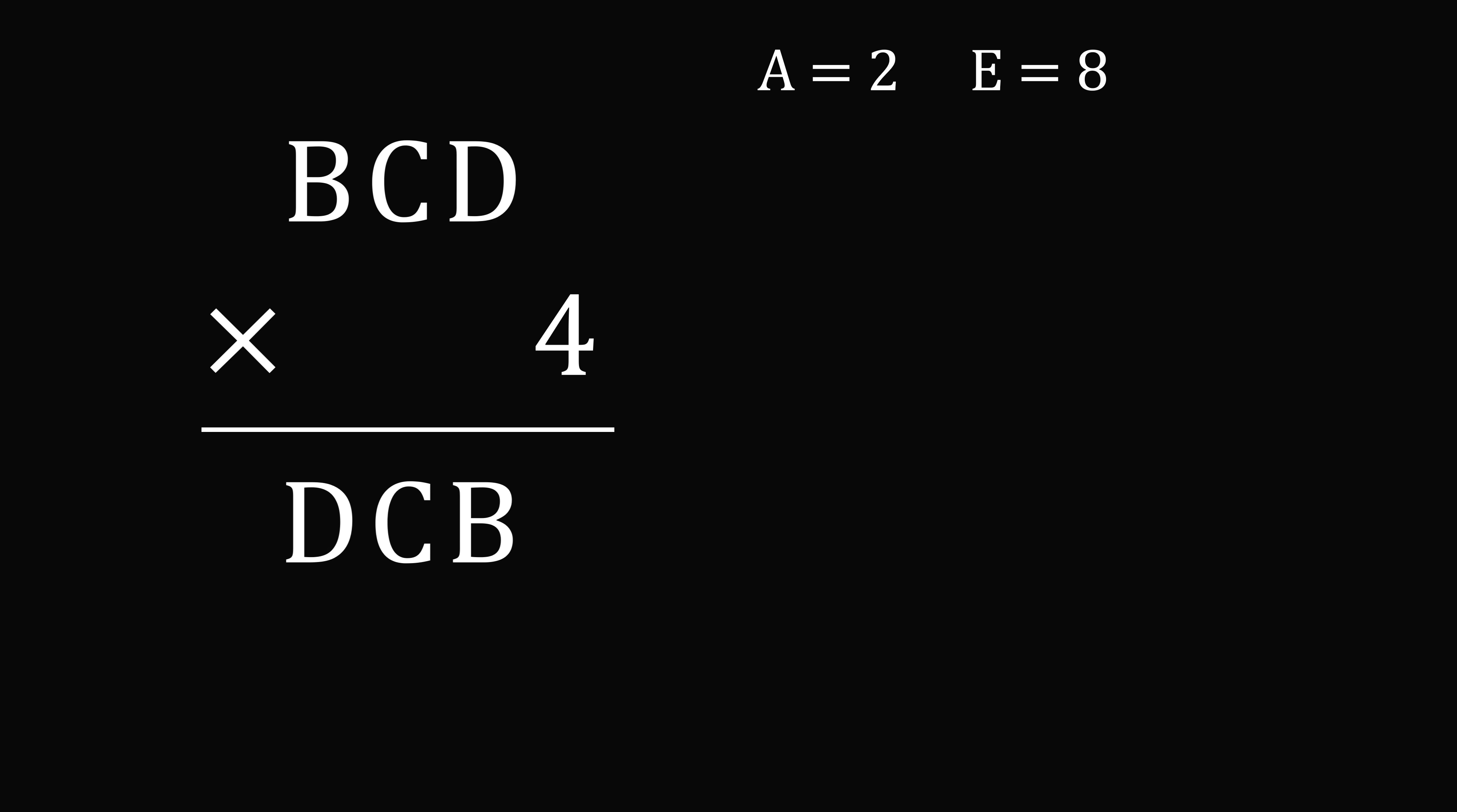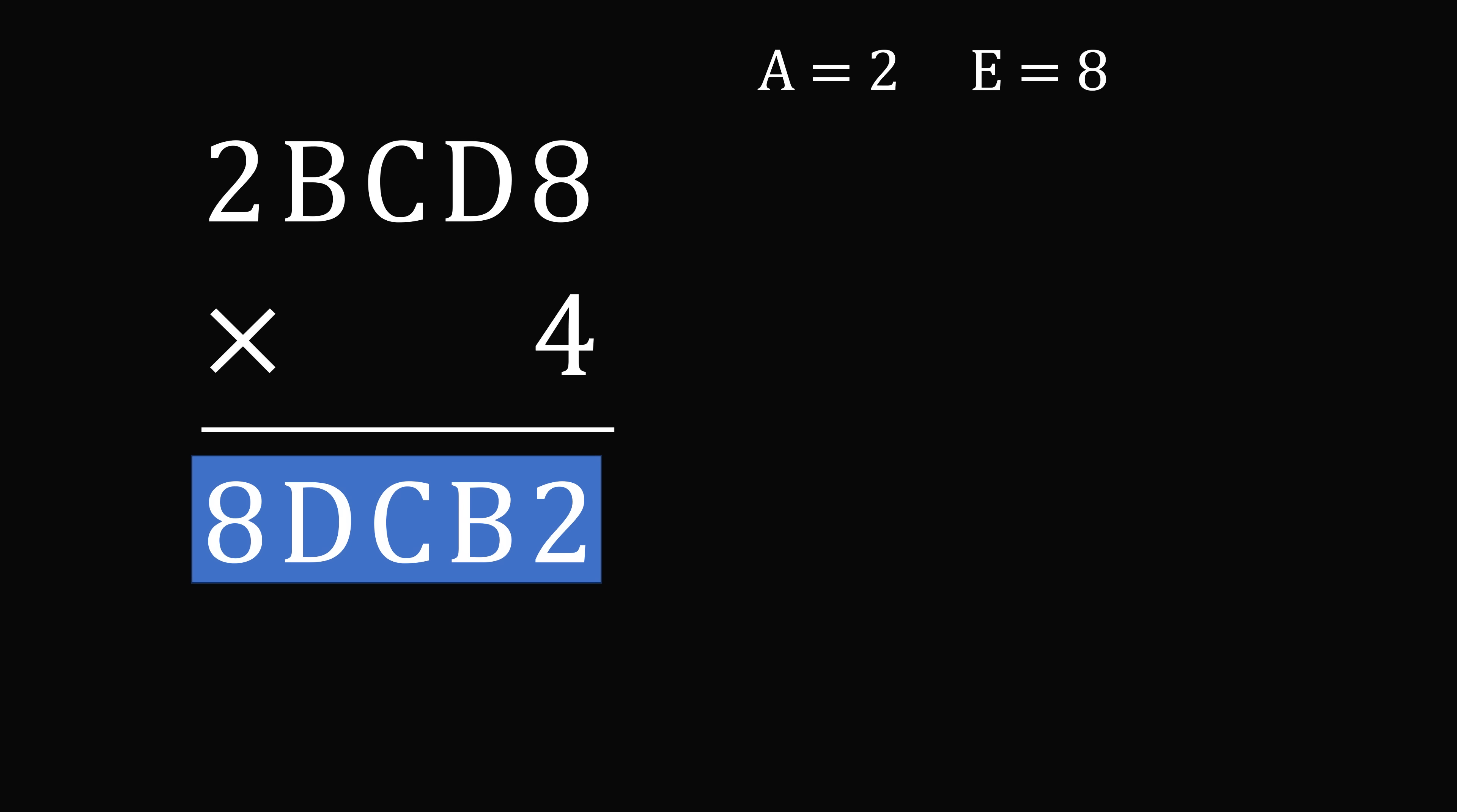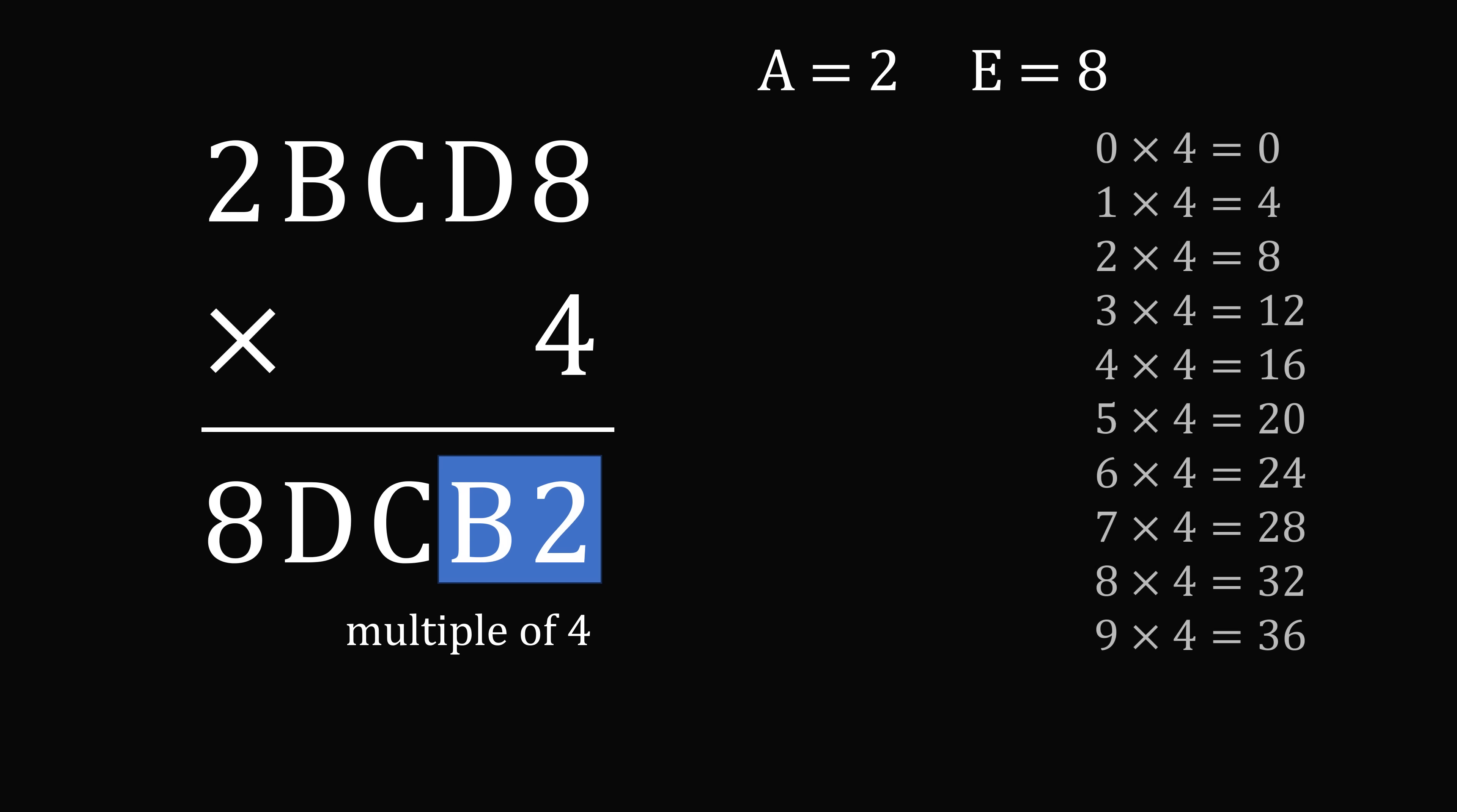So now let's just put in A is equal to 2 and E is equal to 8. Now the result, 8DCB2, that's a number that has to be a multiple of 4. The divisibility rule for 4 is that a number is divisible by 4 if and only if the last two digits is a number that's a multiple of 4. So B2 as a number has to be a multiple of 4. So let's look at our times table for 4. So we could have 12, we could have 32. That would mean B would be equal to 1 or 3.